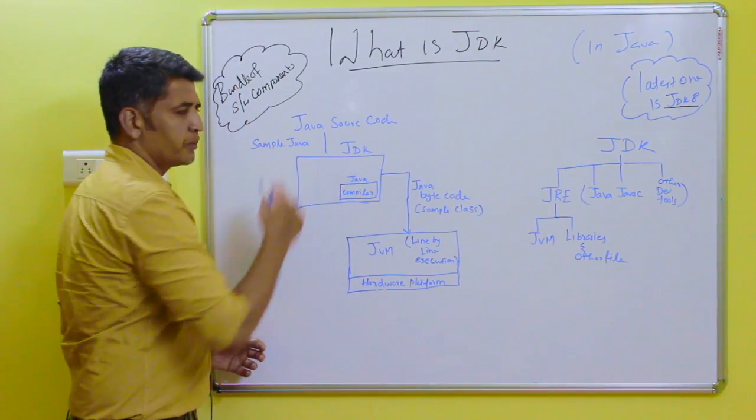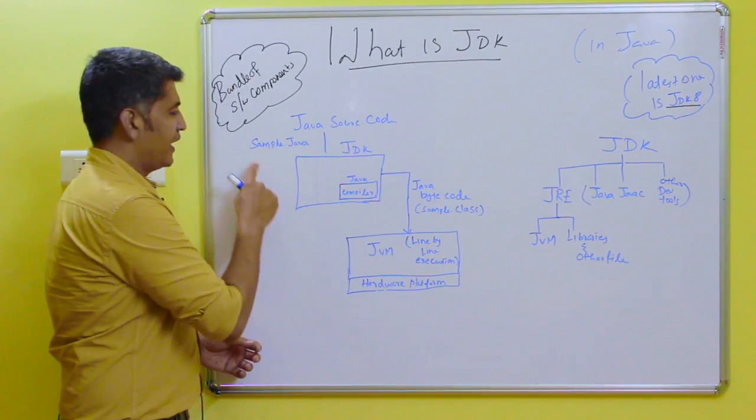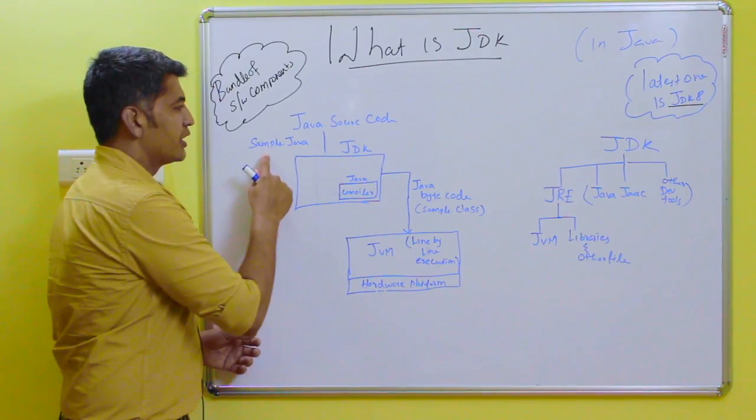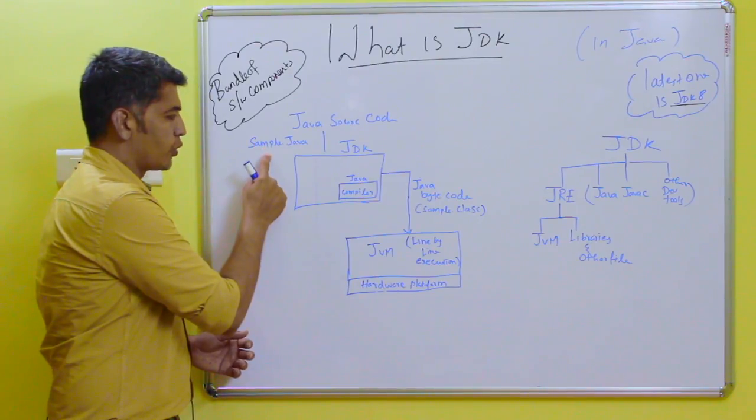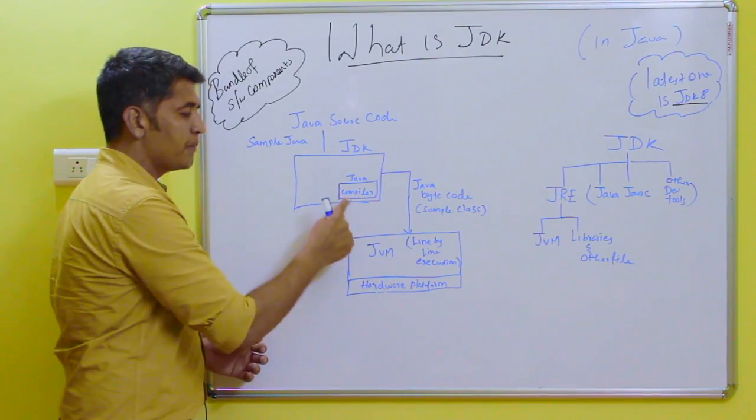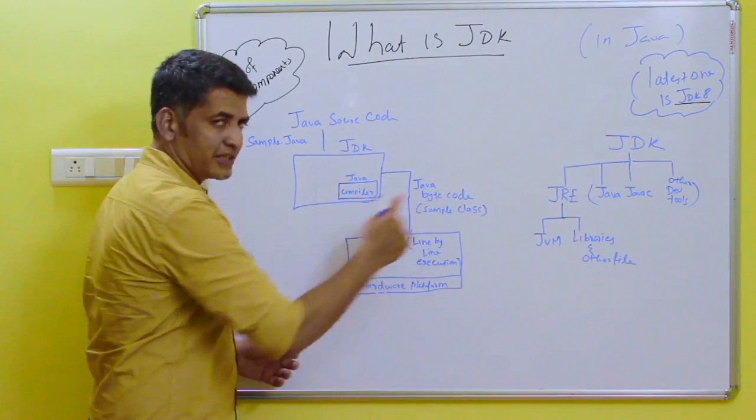If the programmer is coding Java, he'll save the file with the extension of .java. This is the Java file, which will be called as Java source code. This Java source code will be given to the Java compiler. Java compiler will compile and it gives the output of Java byte code.